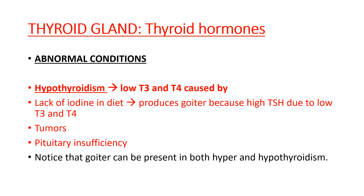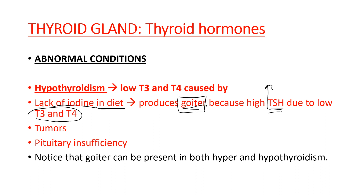A decrease in the levels of T3 and T4 is called hypothyroidism. Hypothyroidism could be caused by a lack of iodine in the diet. A lack of iodine will cause an increase in TSH because there is no high T3 and T4 to produce the negative feedback mechanism. Continually increasing levels of TSH cause the thyroid gland to grow in size, causing the condition known as goiter.